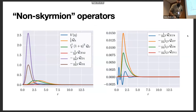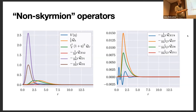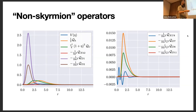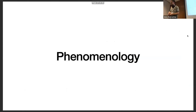Regarding the other operators that do not generate skyrmions by themselves: they could still affect skyrmion physics when included together with QD1 and QD2. We did a quick calculation computing their contribution to the energy density in a pre-computed configuration with just QD1 and QD2, and found their contribution to the energy is pretty small — about one percent. We took this as an indication that these operators are probably not very important for skyrmion physics, though a more detailed study would be valuable.